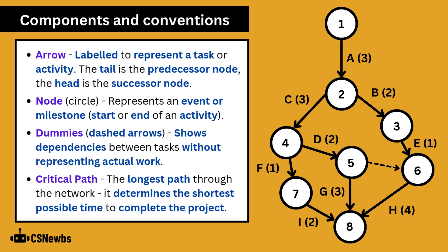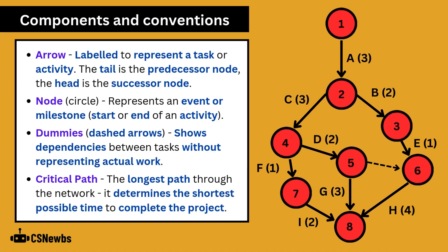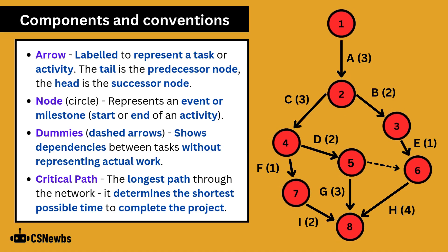The two main components in an arrow diagram are arrows and nodes. Arrows are labelled to represent a task or activity. The tail comes from a predecessor node and it points as its head to the successor node. The node is usually represented by a circle and this is an event or a milestone.